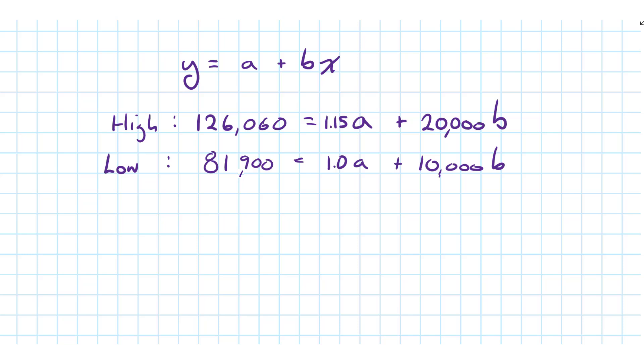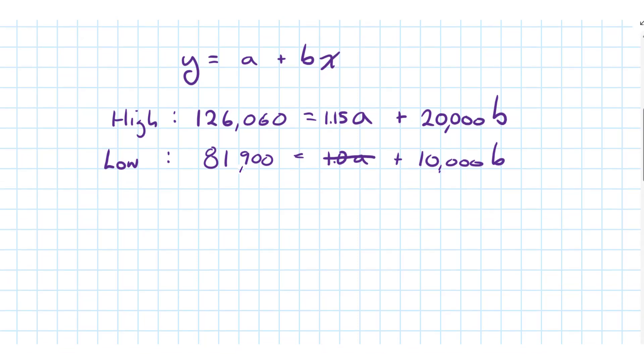An easy way to do that would be to multiply both sides by 1.15. Because when this turns into 1.15a, we could subtract it from the formula above and we'll be left with 0a. Let me show you at this point. So I will multiply both sides by 1.15.